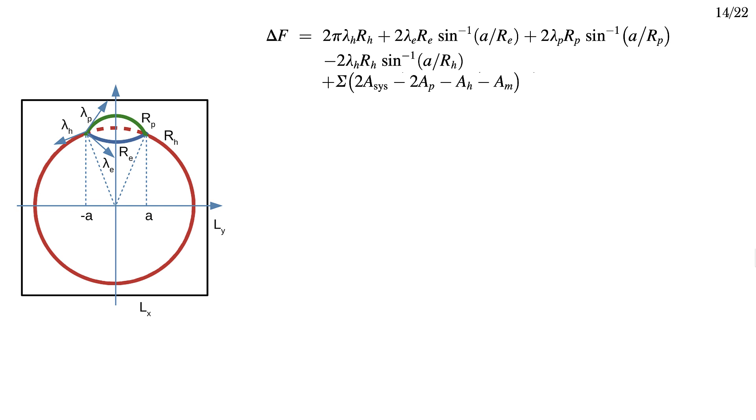The last term is the free energy associated with changing the membrane area when the pore is created. If we approximate the membrane as incompressible, we can say that this change in the area is zero, and use the membrane tension sigma as a Lagrange multiplier.